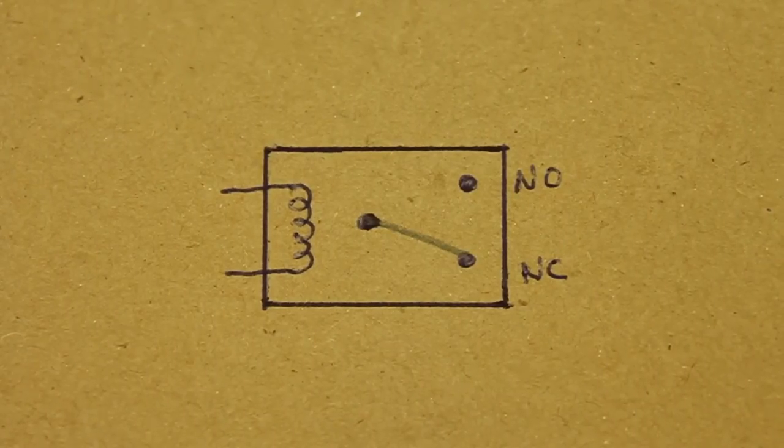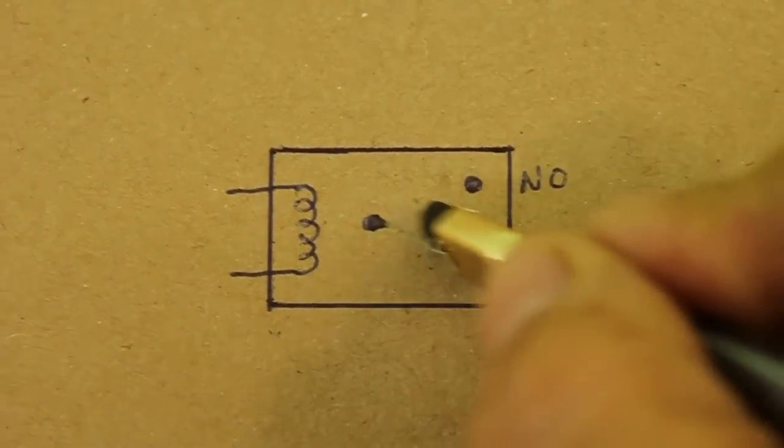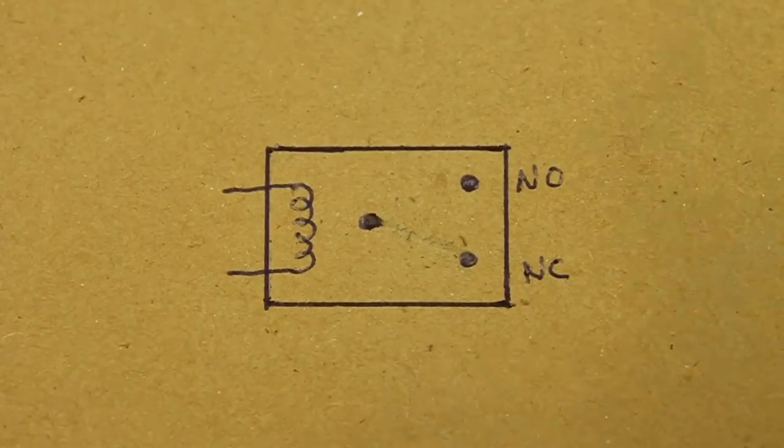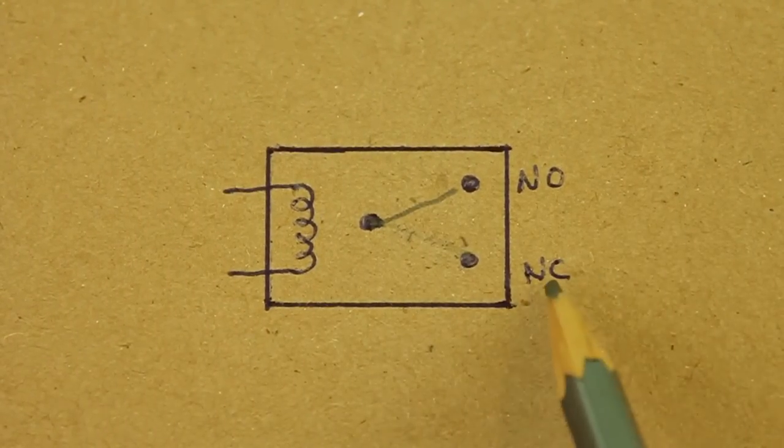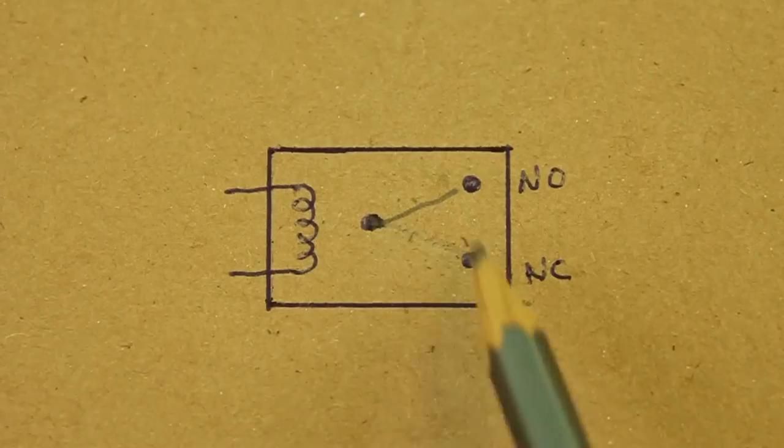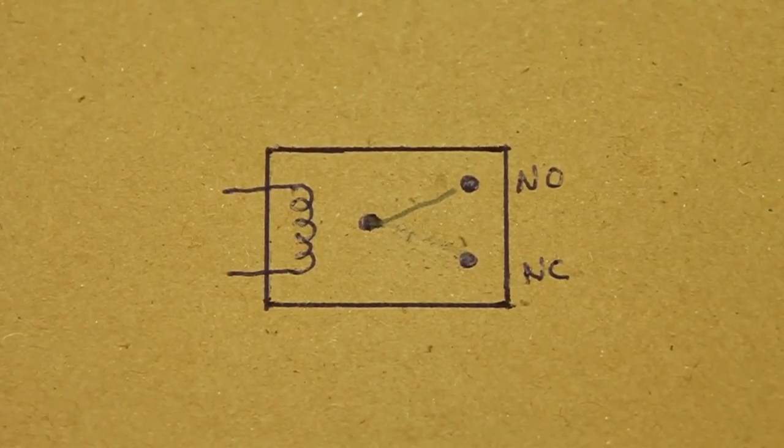But when we energize the coil, the switch here moves to the other position and the normally closed contact is now open. There is no continuity and the normally open is now closed.